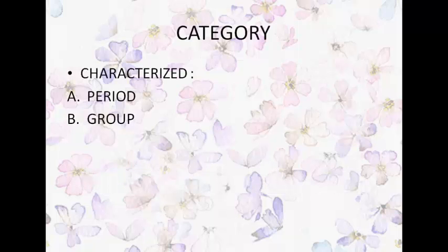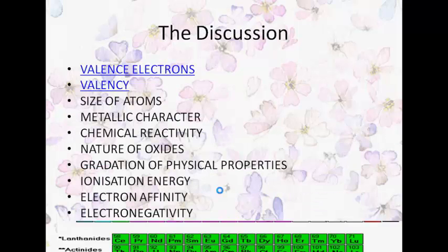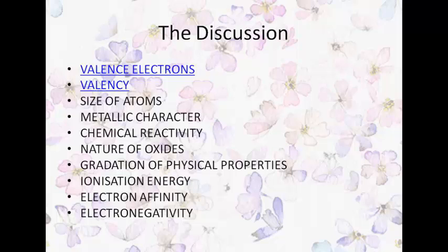We categorize the classification of elements with respect to periods and groups. In the modern periodic table, groups are the vertical columns and periods are the seven rows. The characteristics that help in classification include valence electrons, valencies, size of atoms, metallic character, chemical reactivity, nature of oxides, ionization energy, electron affinity, and electronegativity.